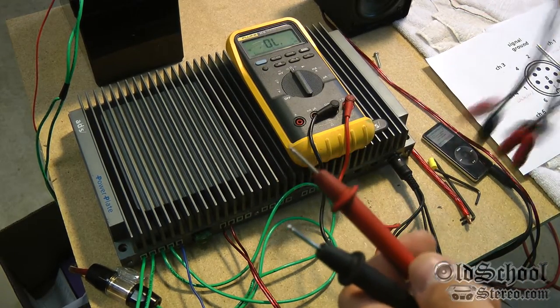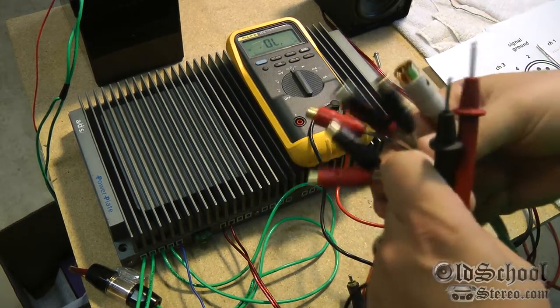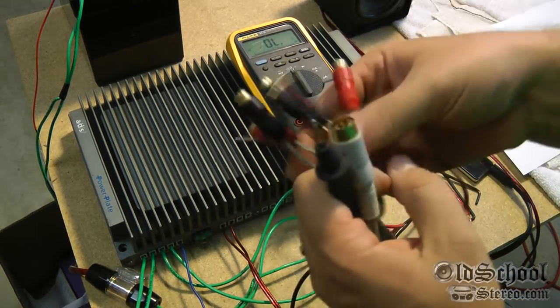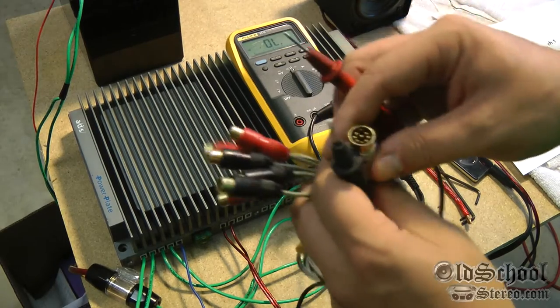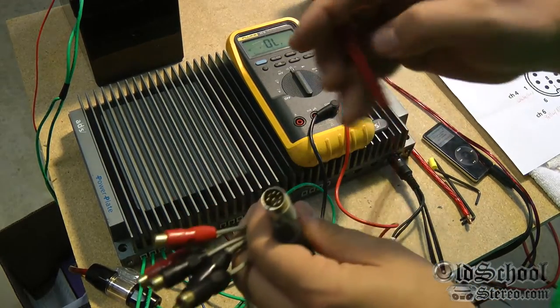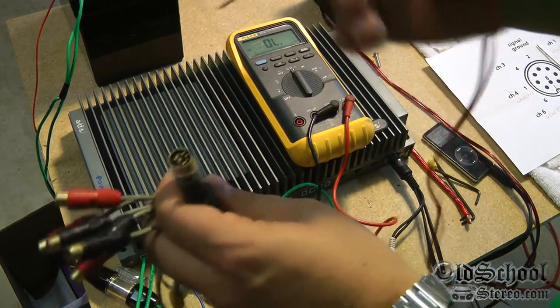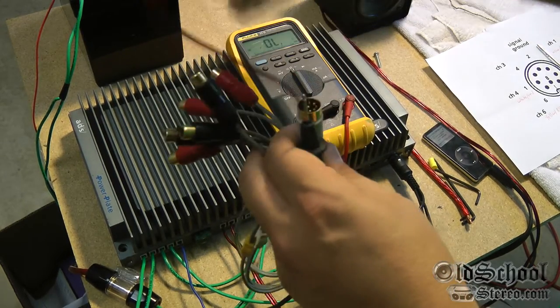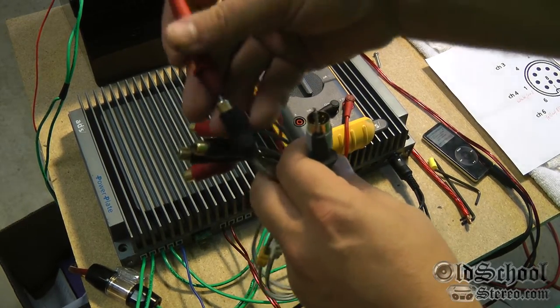Alright, so what I've decided to do here is use my Fluke multimeter. I'm going to go ahead and test all of the leads here and figure out which one of these is not working. Hopefully I get myself within the camera.